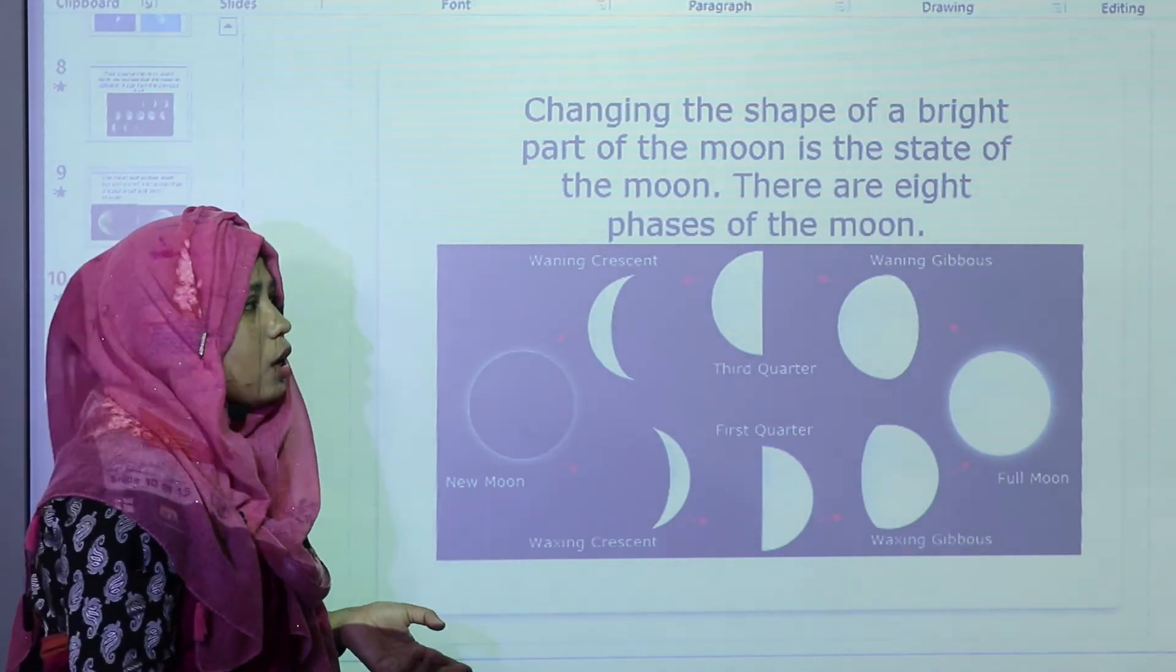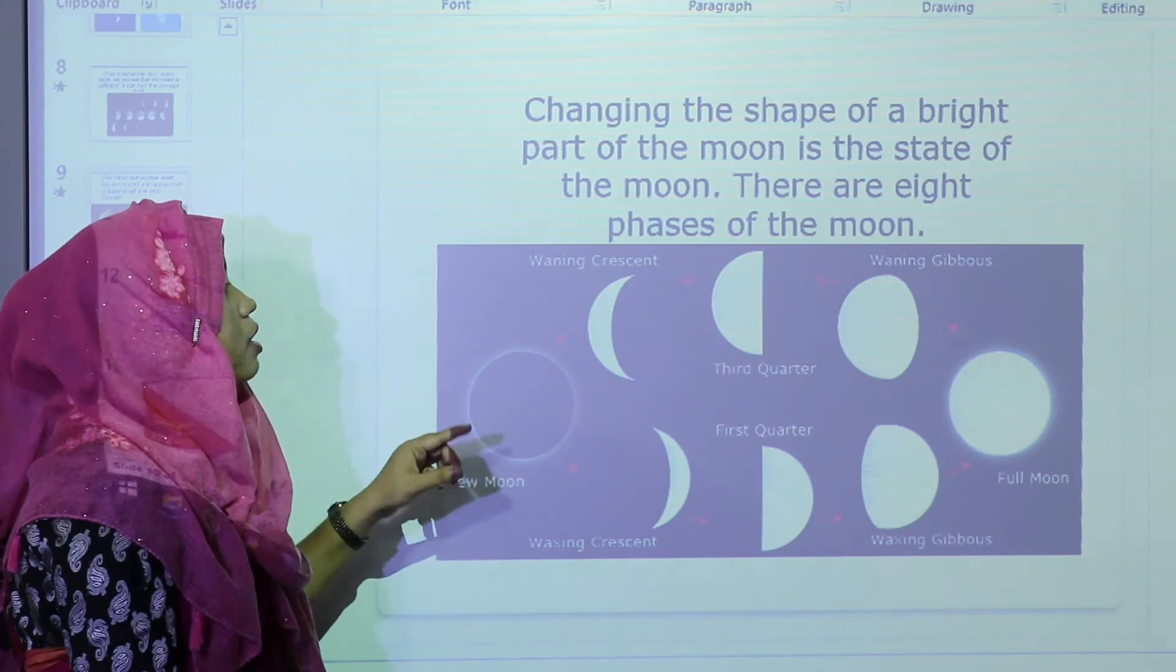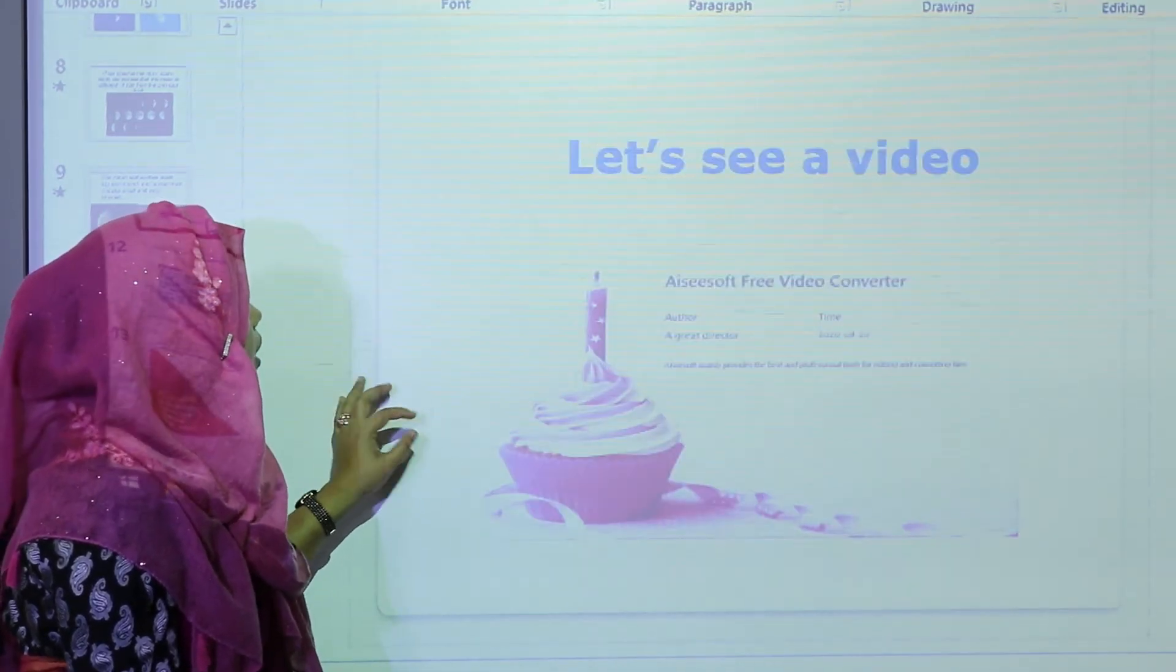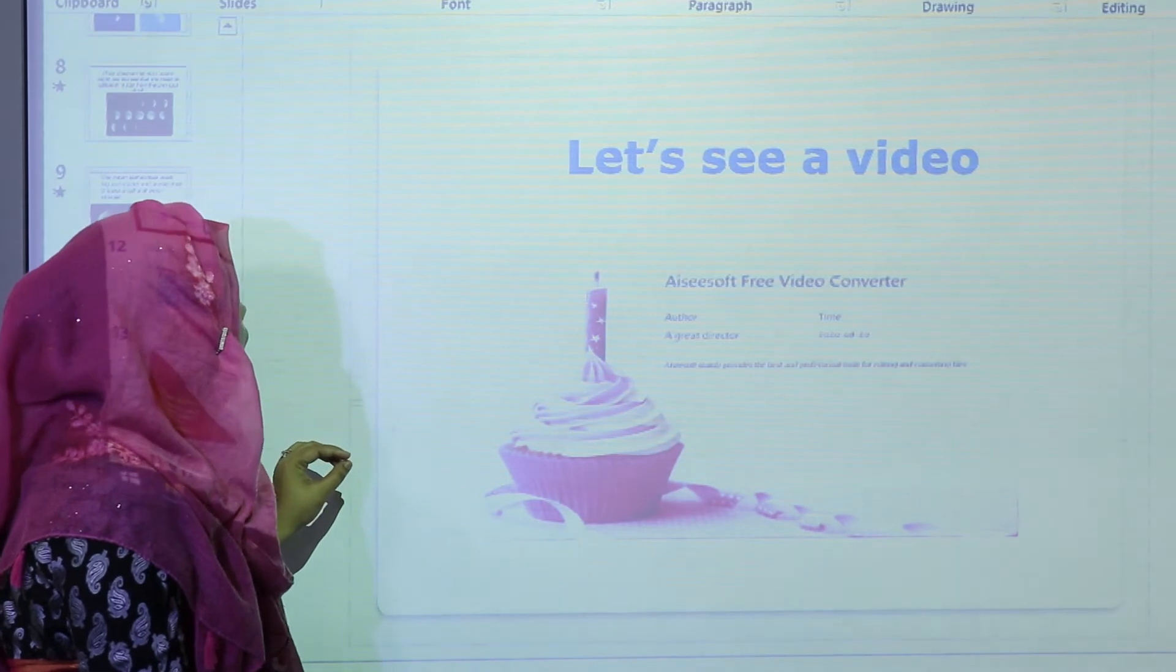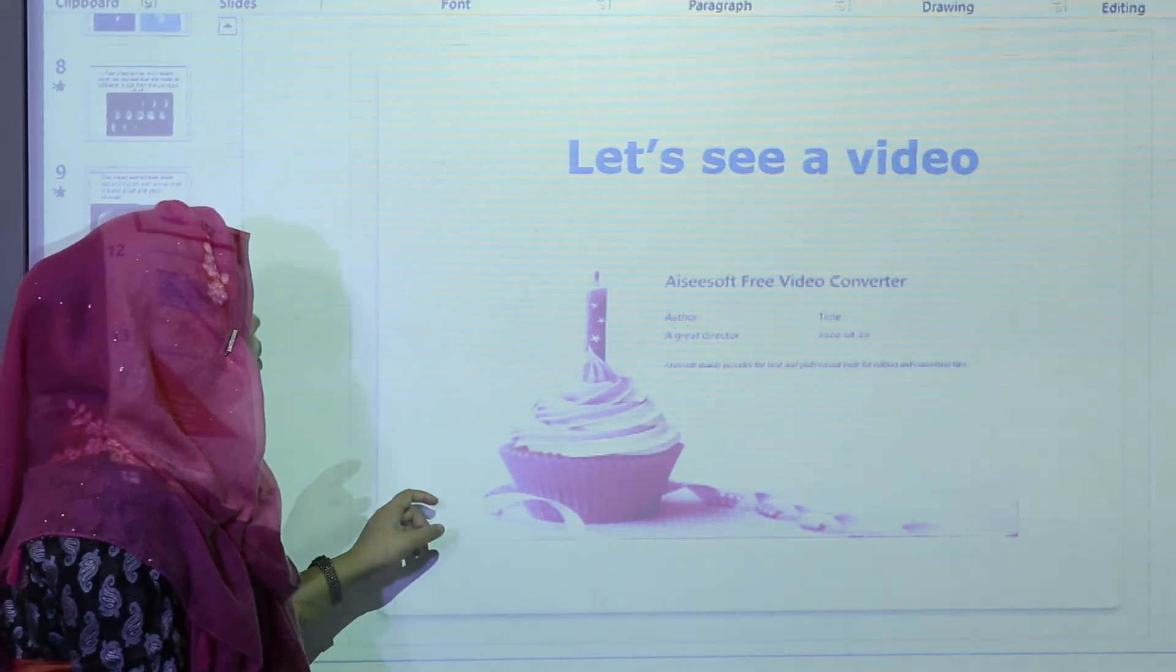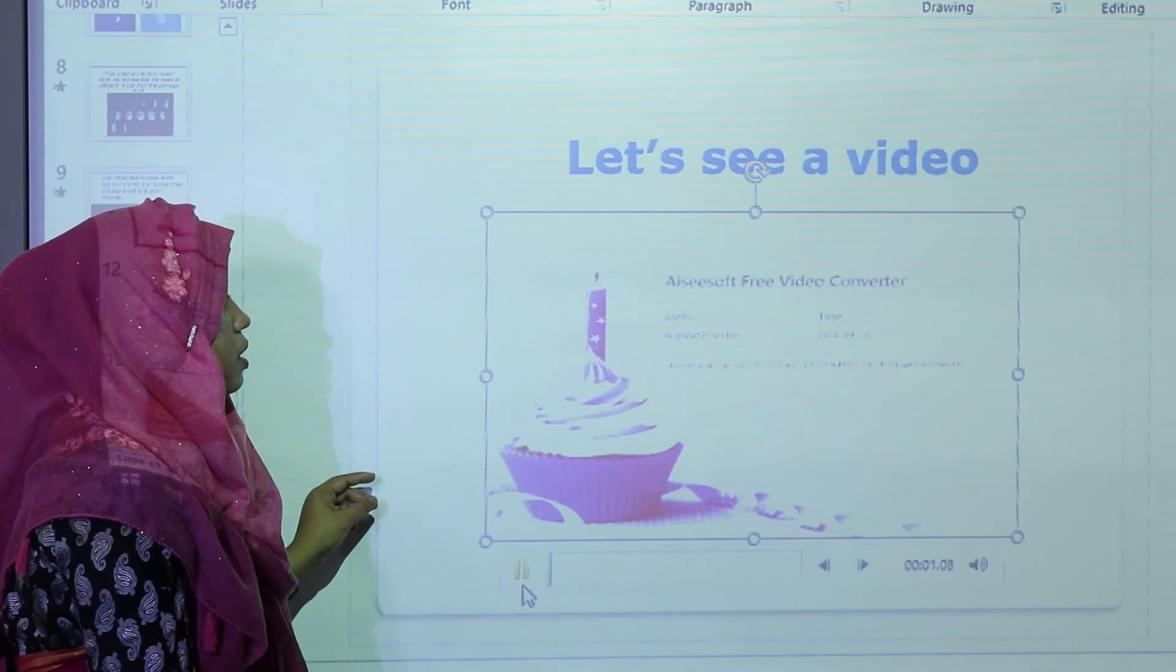How many phases we get? We get eight phases of the moon. Here we get the picture also. And then let's see a video. Then we can understand easily.